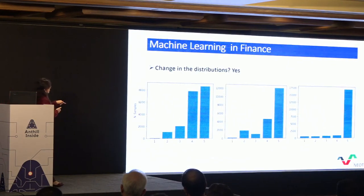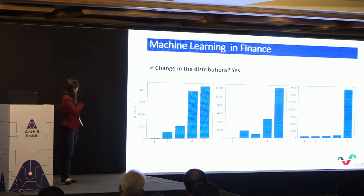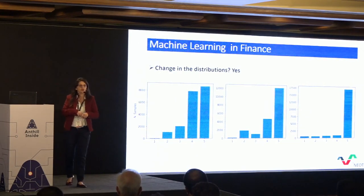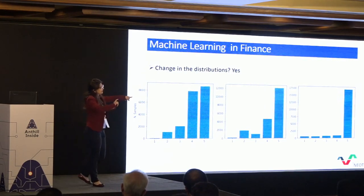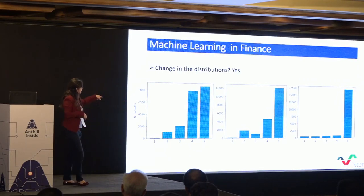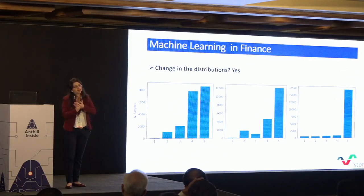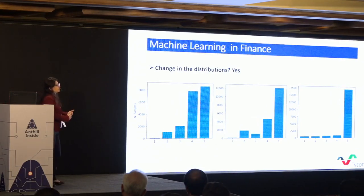Another problem encountered when applying machine learning in finance is the change in distributions. This problem is related to the non-stationarity problem. When the distribution of the data changes, previous observations are no longer meaningful. When the distribution changes, you have to restart your model — start from zero over again.